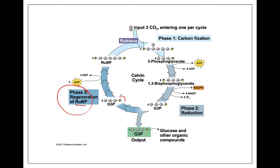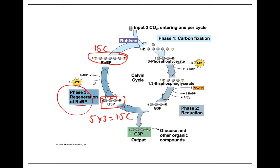The last step is regeneration of the starting materials, which is our RuBP. At this point we've already finished making the sugars we wanted, and all we have to do is reset the cycle. Five G3Ps, each with three carbons, gives us 15 carbons — exactly what we need to make three molecules of RuBP. This takes a little energy to rearrange the shape from G3P back into RuBP, and then the cycle can repeat again.